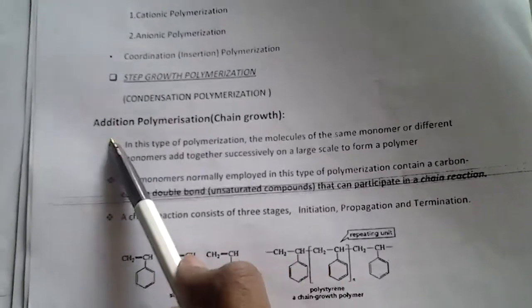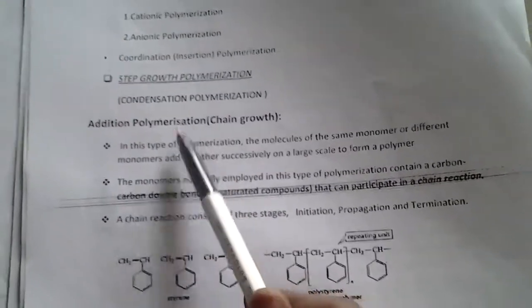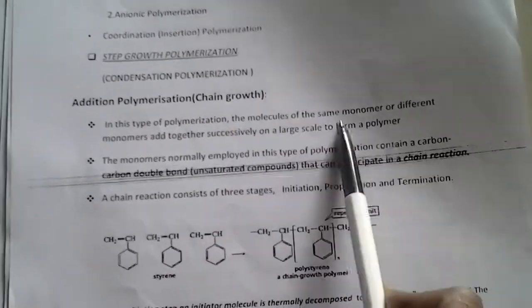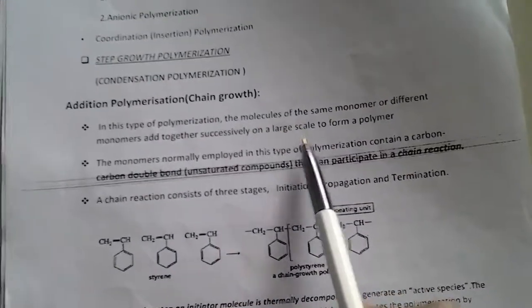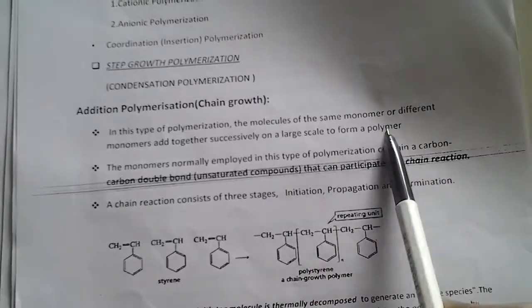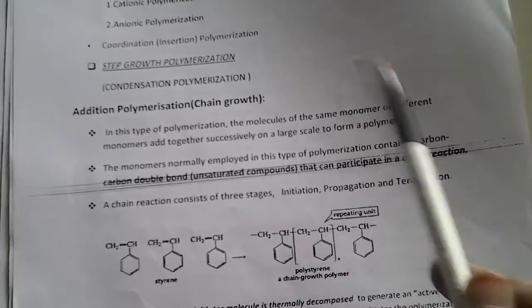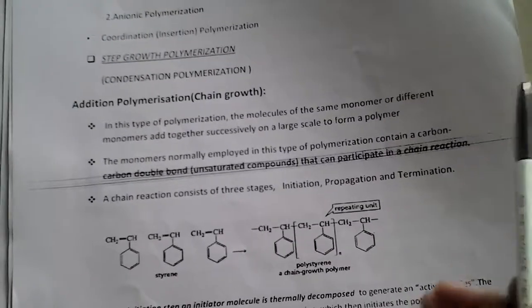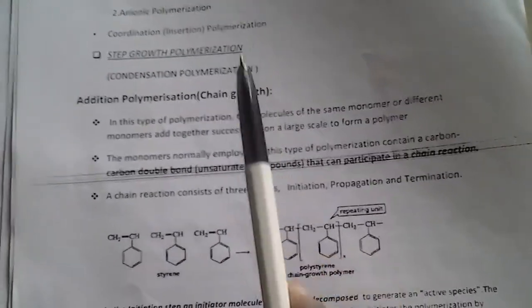Addition, as the name indicates, is the adding of monomers to form a polymer — this is called addition polymerization. In this type of polymerization, molecules of the same monomer or different monomers add together successively to form a polymer. That means to form a polymer, the same or different monomers are successively added together to form the addition polymer.